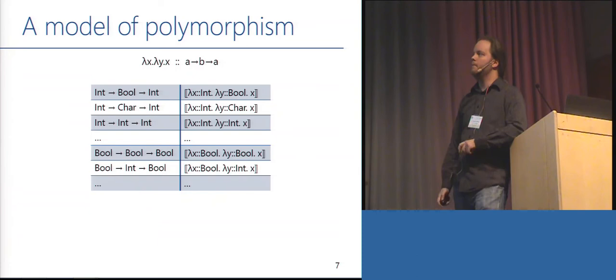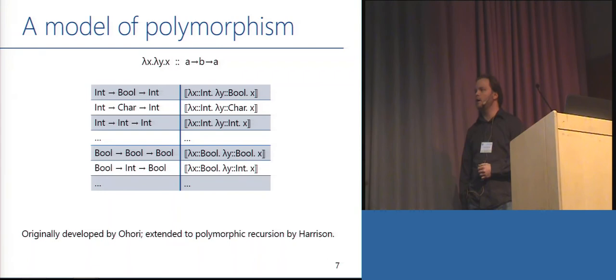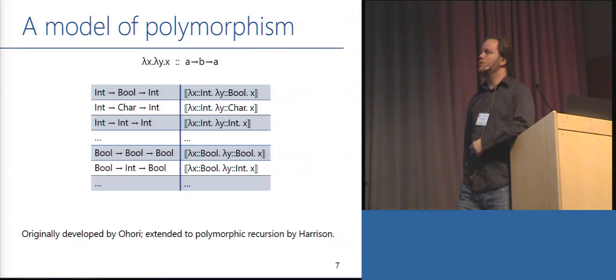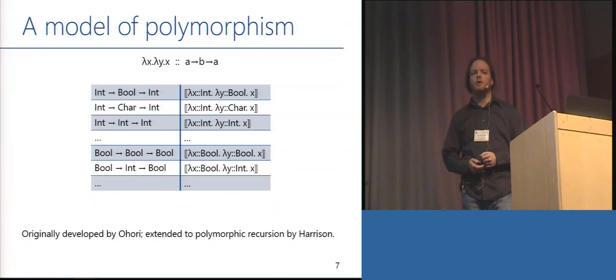This was originally developed by Atsushi Ohori, about a quarter century ago, and extended to polymorphic recursion by Bill Harrison in 2005. I'm going to look at its application to overloading. But before that, let's talk about a few nice properties of this approach to modeling polymorphism.